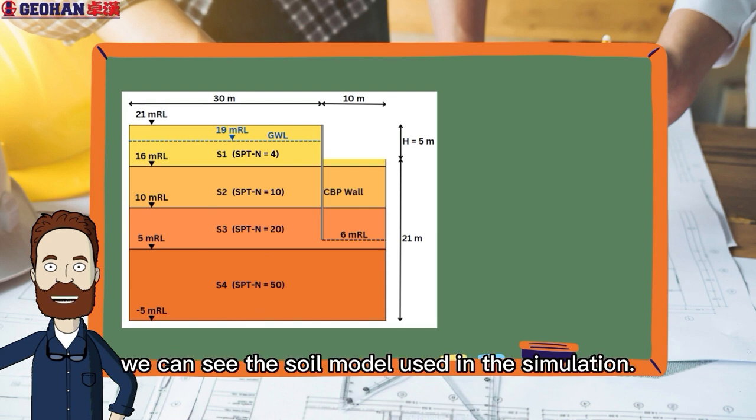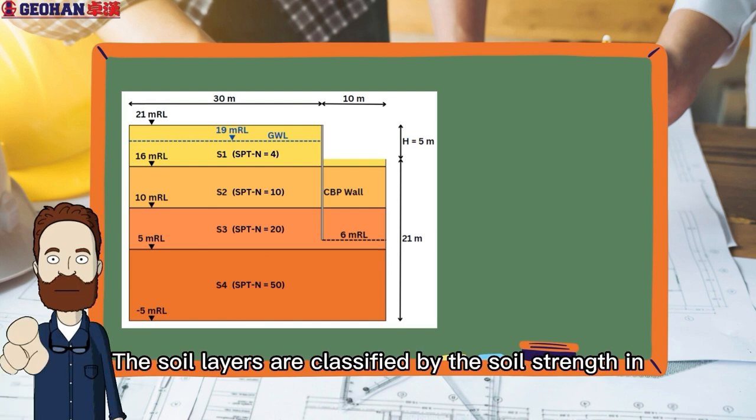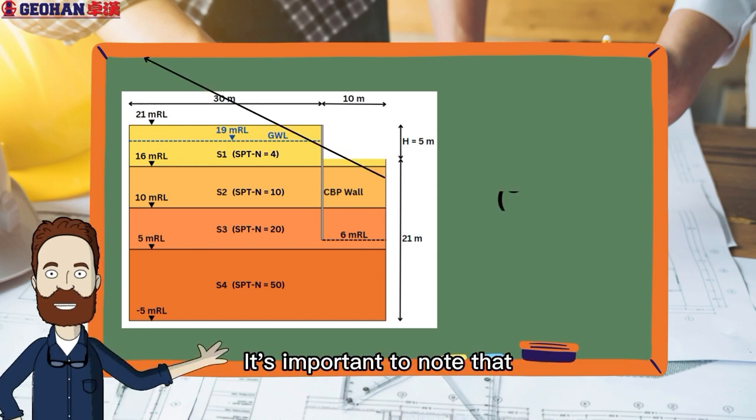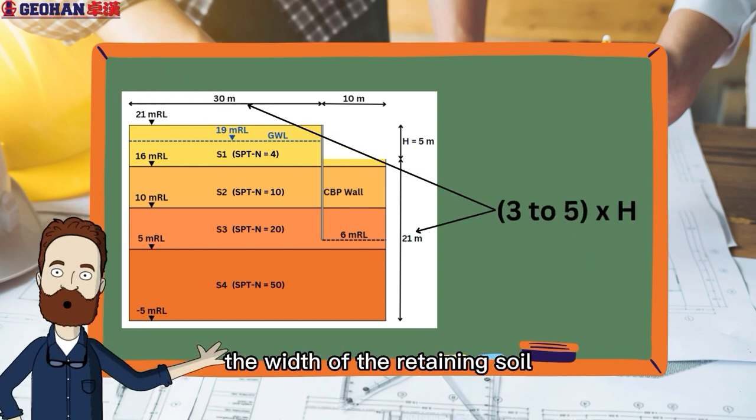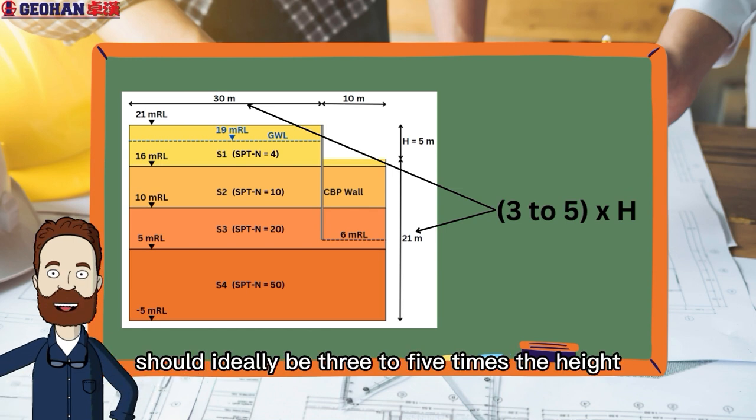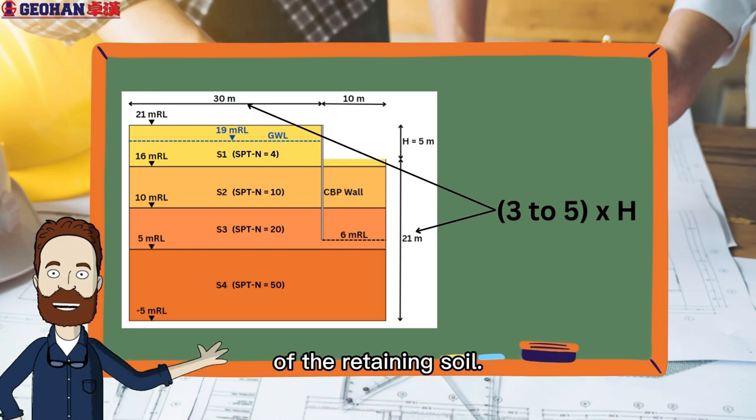In this illustration, we can see the soil model used in the simulation. The soil layers are classified by the soil strength in terms of SPT-N value. It's important to note that the width of the retaining soil and the depth of the soil below the excavation level should ideally be three to five times the height of the retaining soil.